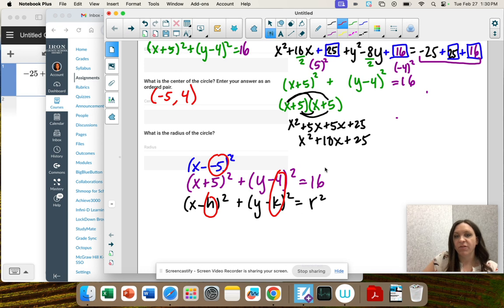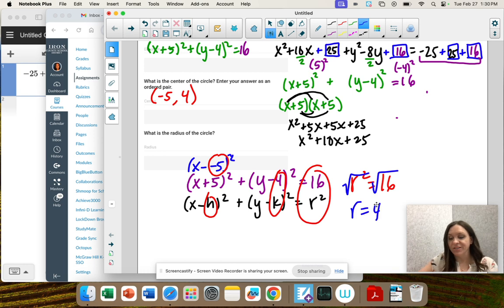So negative 5, 4. And then r squared is 16. To find r, you would square root both sides. So the radius is 4.